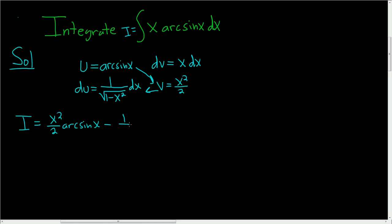I'm going to go ahead and pull the one-half out, and then we have the integral of x squared over the square root of 1 minus x squared, and we still have the dx. Now we have to deal with this new integral here.